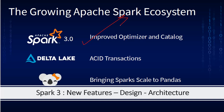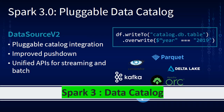In Spark 3, a pluggable integration for catalogs across different data sources has been introduced. ACID properties are being brought in via Delta Lake. There's also strong support for data scientists to scale their Python and pandas workloads to Spark's distributed computing. The Data Source V2 APIs, which were evolving in Spark 2, are now mature APIs in Spark 3. This integrated catalog allows plugging in any data source and reading or writing directly from catalog tables — a marquee feature of Spark 3.